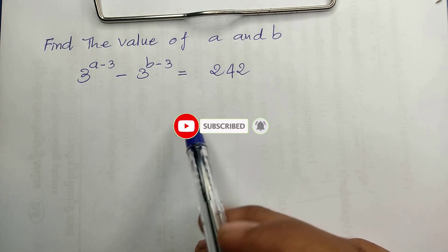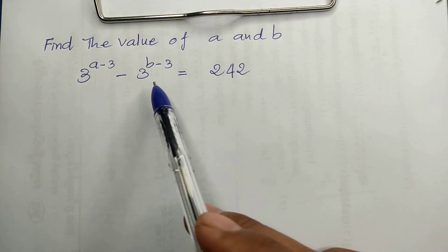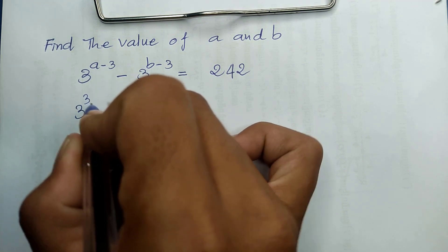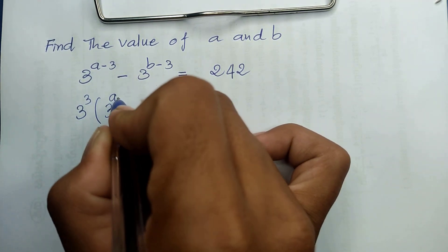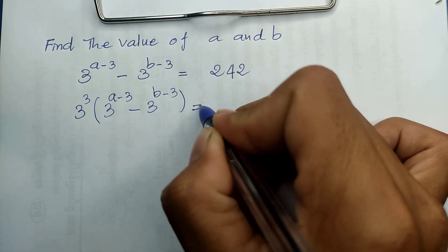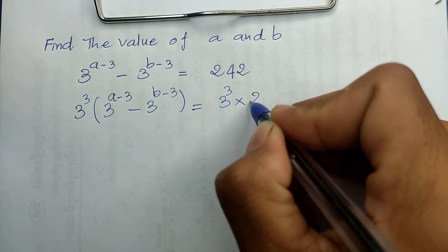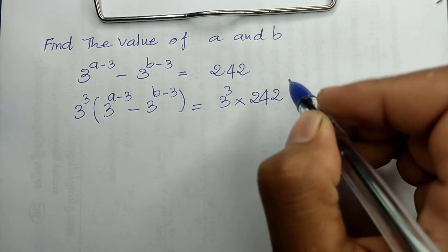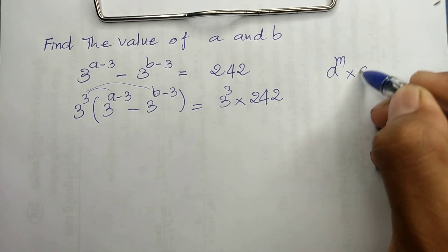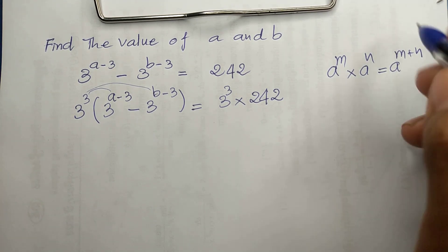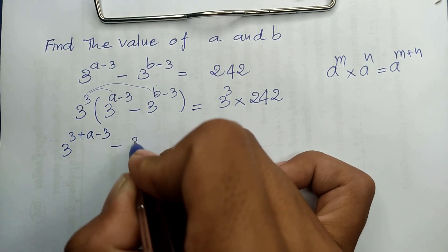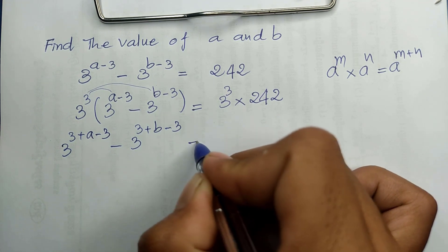Now we go to the solution together. I multiply both sides of this equation by 3^3. So we have 3^3 multiplied by 3^(a-3), minus 3^(b-3), equal to 3^3 multiplied by 142. Using the rule a^m × a^n = a^(m+n), we get 3^(3 + a - 3) minus 3^(3 + b - 3) equals 3^3 × 142.